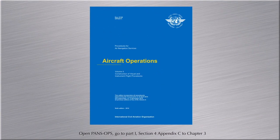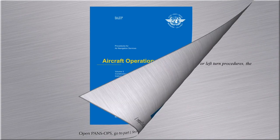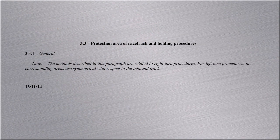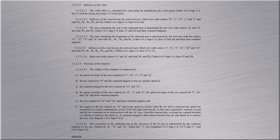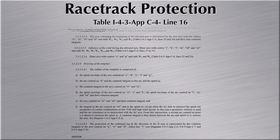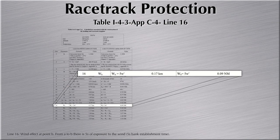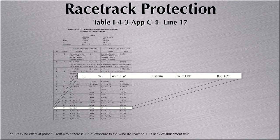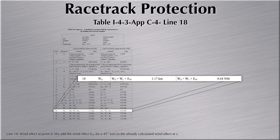Back to the calculations. Line 16 calculates the wind effect at point B, which is 5 seconds of wind exposure. Line 17 calculates the wind effect at point C, which is a total of 11 seconds of wind exposure — 6 seconds reaction and 5 seconds back. Line 18: the wind at D is the wind effect at C plus the effect for a 45-degree turn.